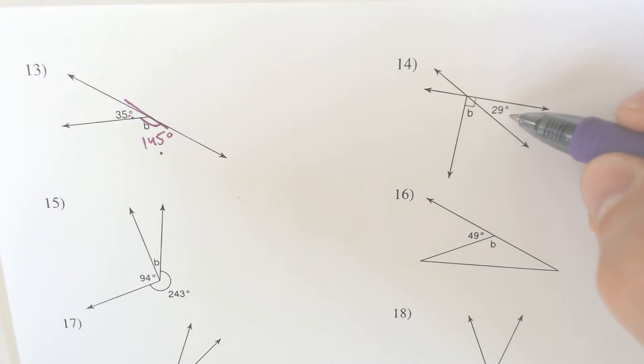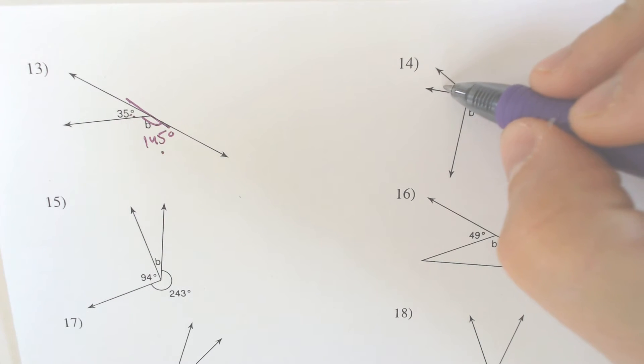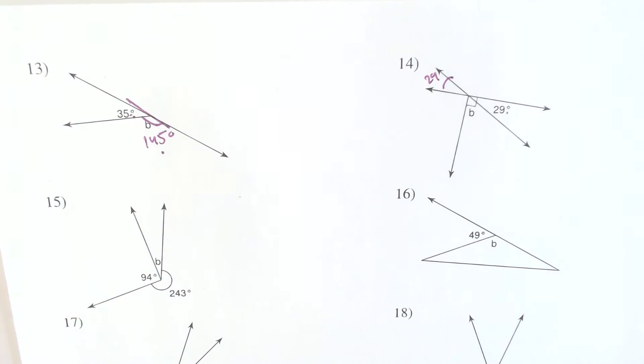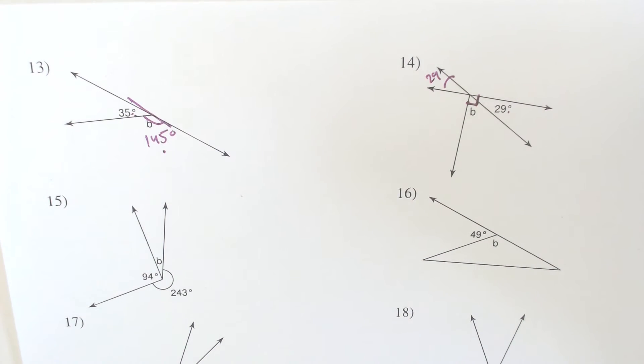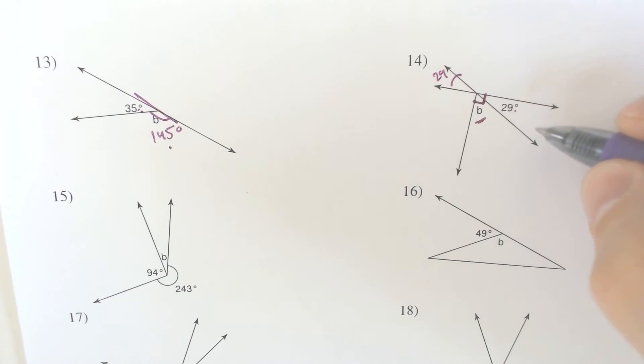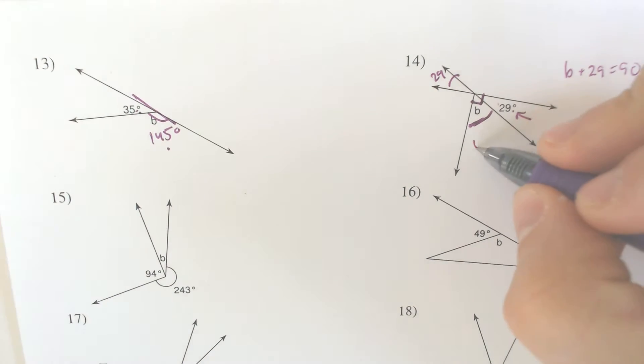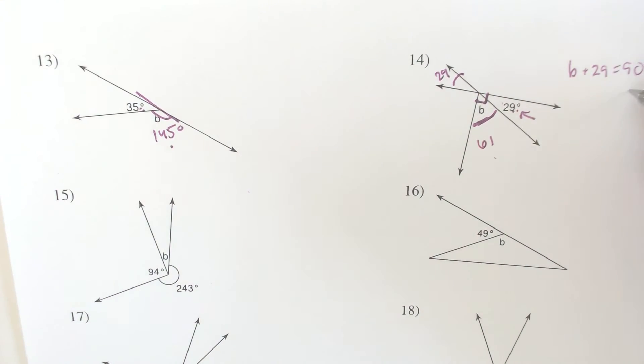Careful, because we do have a vertical angle here. 29 could go over here, which is entirely true and worthless. Because if we're looking for angle B, angle B is a part of the 90 degree block. So what do you have to have here with 29 to make 90? B plus 29 has to add to 90. Take 29 away from 90, you are left with 61. 61 and 29 make 90.